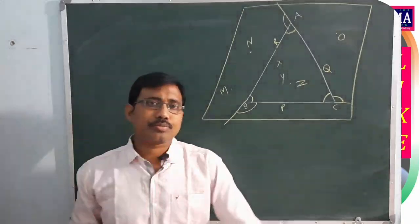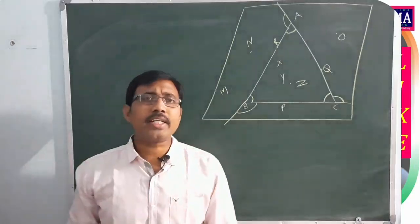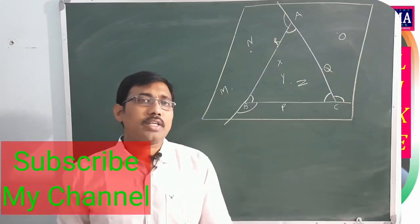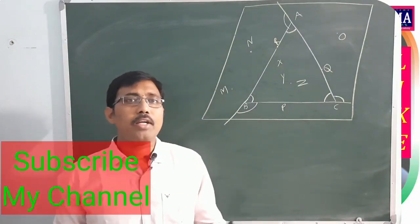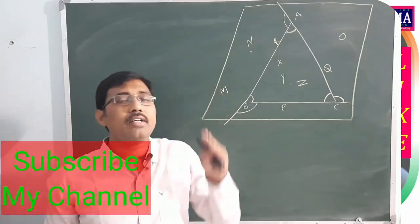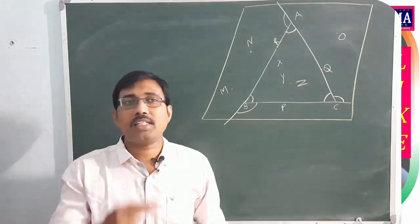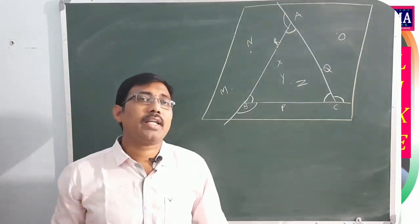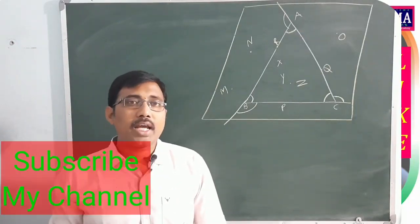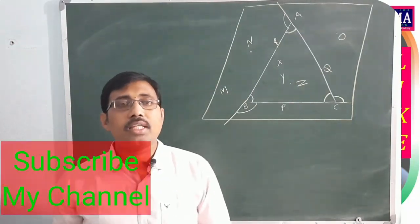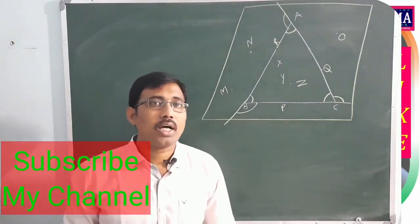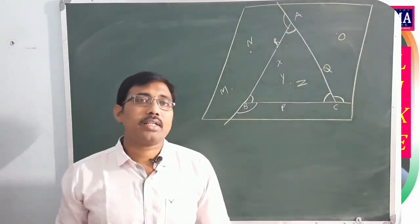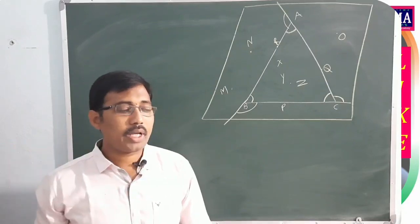Observe the screen: the red color angles are the interior angles. AB is extended, BC is extended, and CA is also extended, forming exterior angles. The blue color regions are the exterior angles; the red color regions are the interior angles.